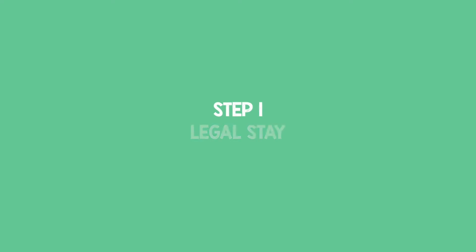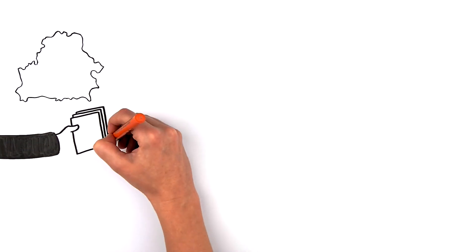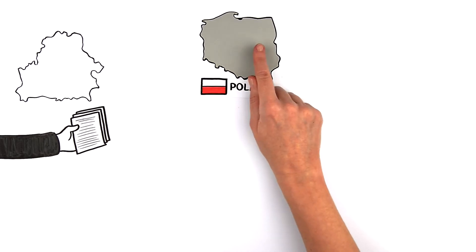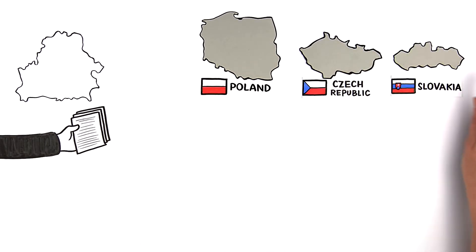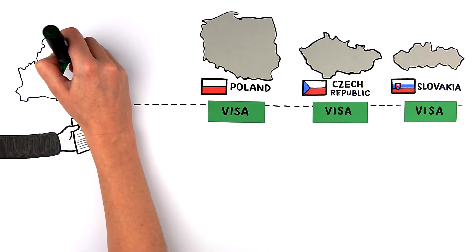Step 1. Legal Stay. Let's start with documents allowing Belarusian nationals to stay in Poland, the Czech Republic or Slovakia. First of all, you'll need a visa. You must apply for it in Belarus.